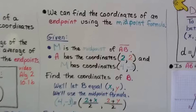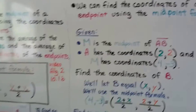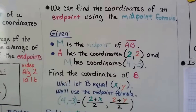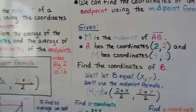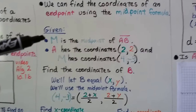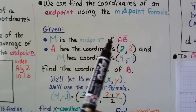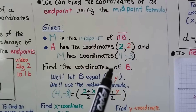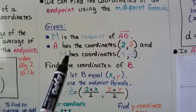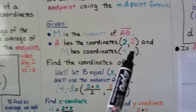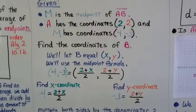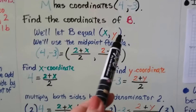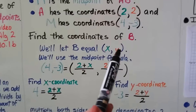We can also find the coordinates of an endpoint using the midpoint formula. It's given that M is the midpoint of segment AB. Point A has coordinates (2, 2), which is x₁ and y₁. The midpoint M has coordinates (4, -3). We need to find the coordinates of B, so we let B equal (x, y) — that's x₂ and y₂.